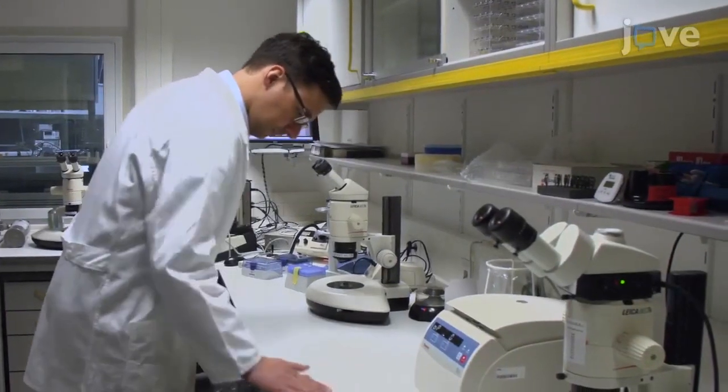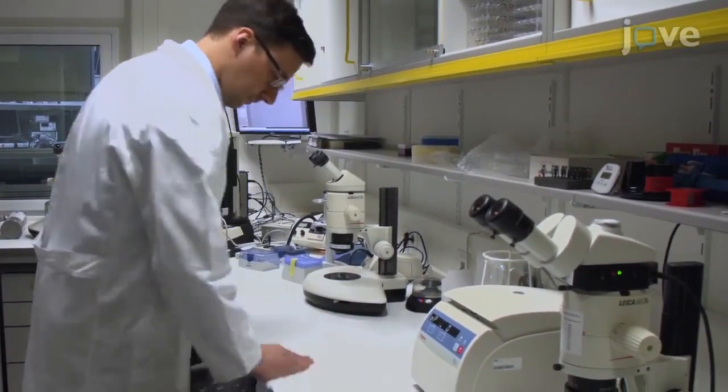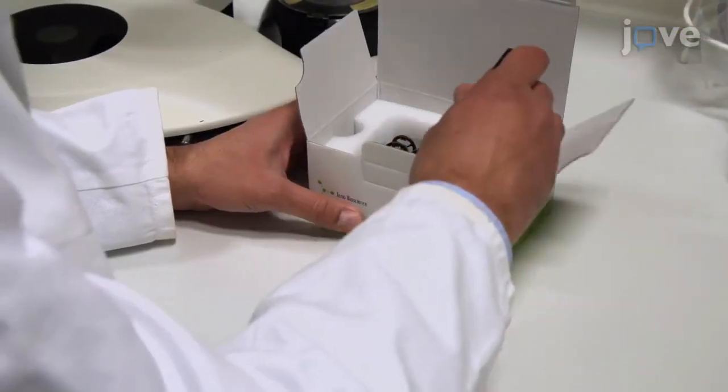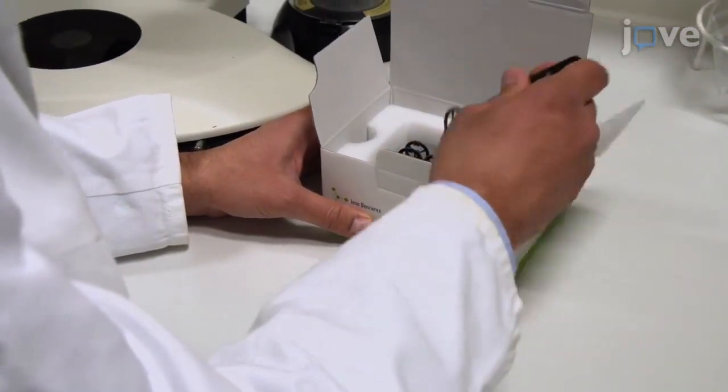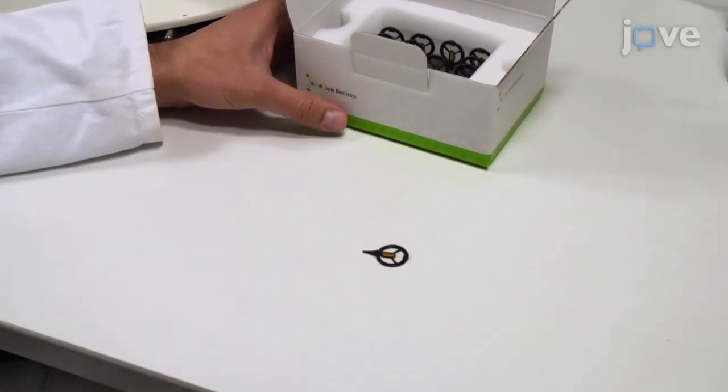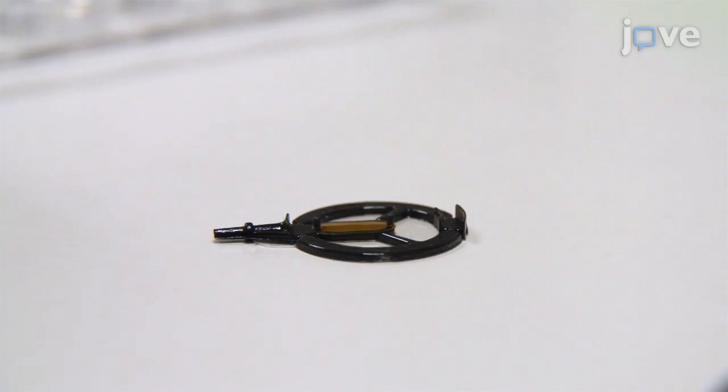To begin, create a clean and dust-free surface using a damp, lint-free cloth. Take one sample holder from its box and gently place it, yellow foil facing up, on the clean surface to avoid damage or unwanted puncture of the backside COC foil.